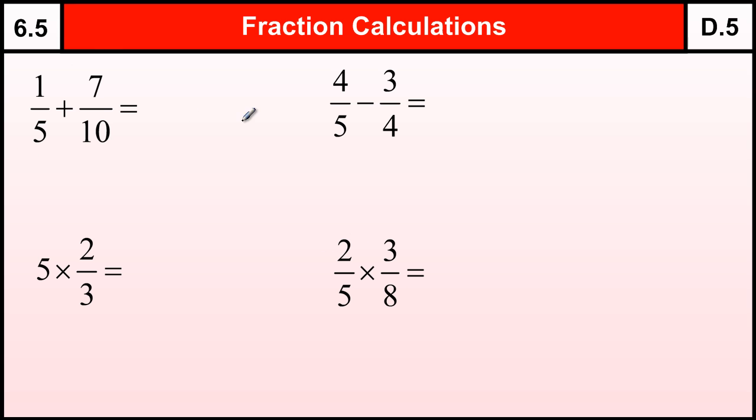But we'll look at the adding and subtracting first. Adding and subtracting is all about finding equivalent fractions that you can then add. You can't add fifths and tenths, it doesn't work, so you've got to find fractions that are the same size. They have a common denominator.